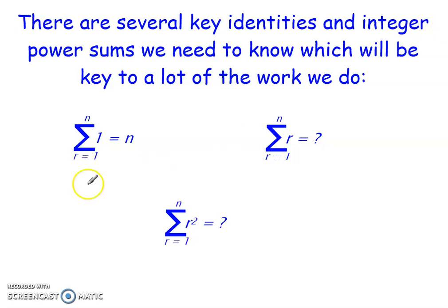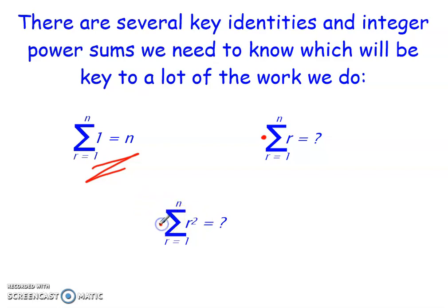What we already know is that the sum from r equals 1 to n of just 1 is equal to n — that is a given identity we should remember. There are two other key ones we need to work with: the sum from r equals 1 to n of r on its own, and the sum from r equals 1 to n of r squared. Each of these has its own identity, and we need to not only remember them but be able to prove them — know where they come from and how to get there.